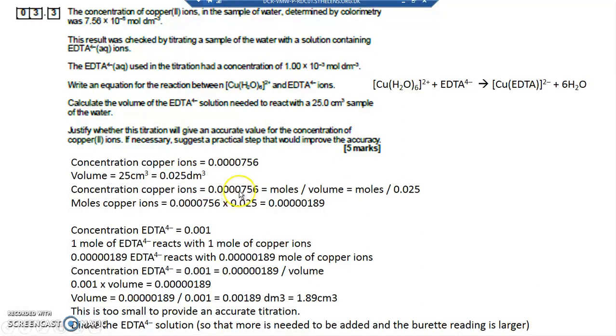So the concentration of copper ions, concentration equals moles divided by volume, moles divided by 0.025. Therefore the moles of copper ions are the two multiplied together and equals 0.0000189. So the number of moles of copper ions equals the number of moles of EDTA ions. Look, one copper, one EDTA.